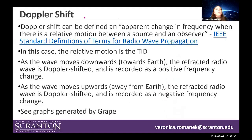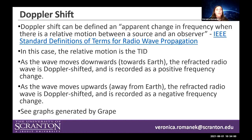Doppler shift can be defined as an apparent change in frequency when there is relative motion between a source and an observer. In this case, the relative motion refers to the traveling ionospheric disturbance. As the wave moves downwards or towards the Earth, the refracted radio wave is Doppler-shifted and recorded as a positive frequency change. As the wave moves upwards or away from Earth, it is Doppler-shifted and recorded as a negative frequency change.